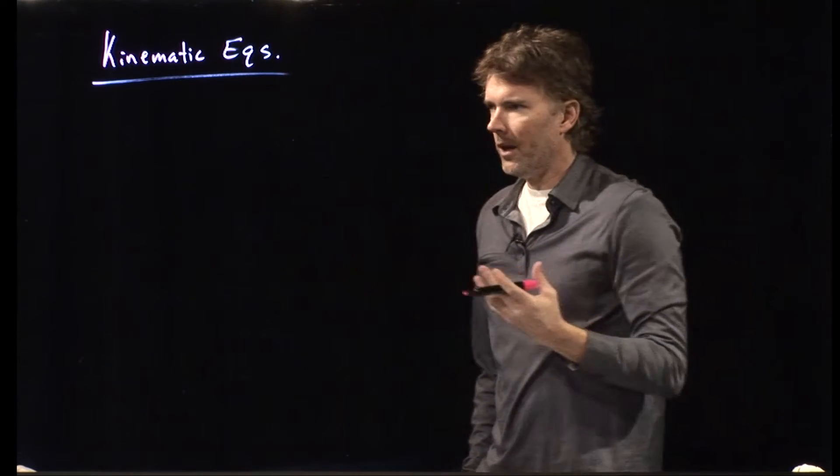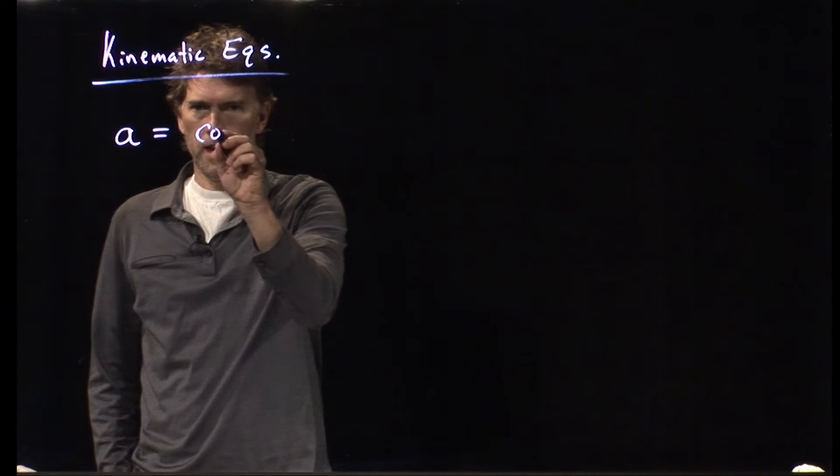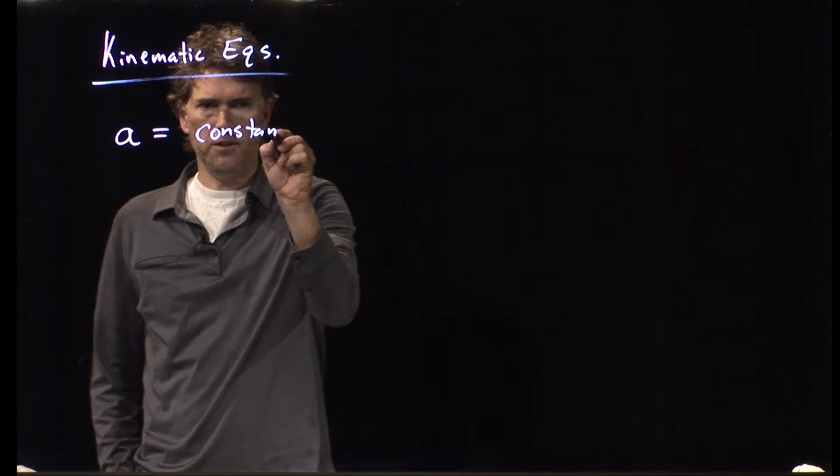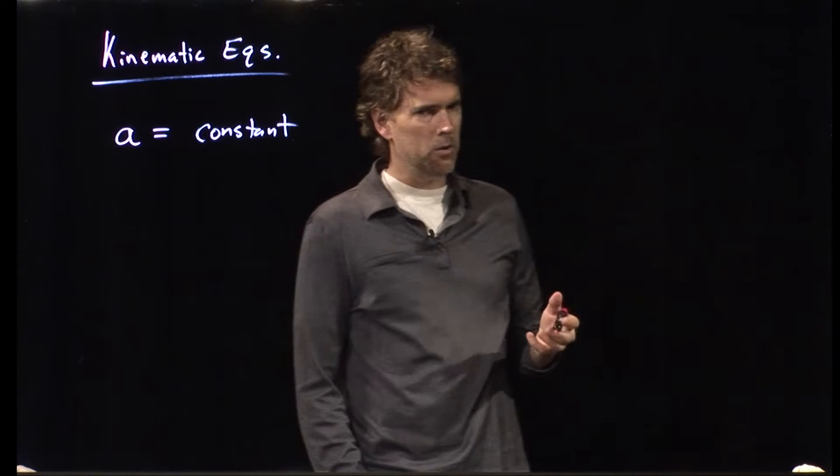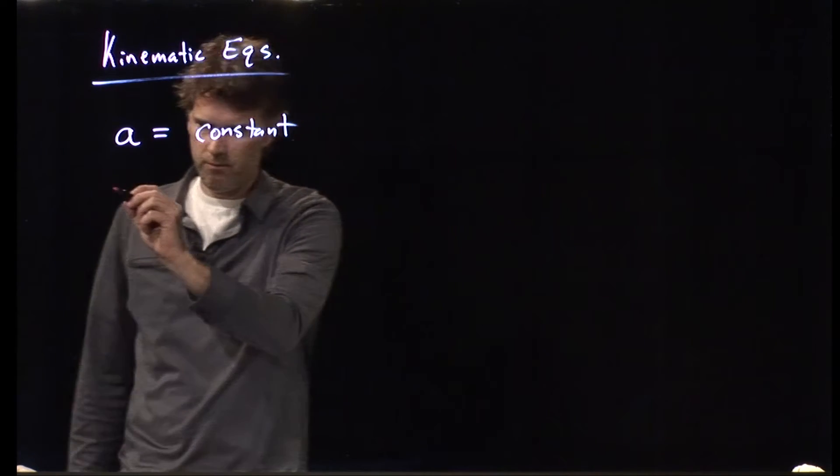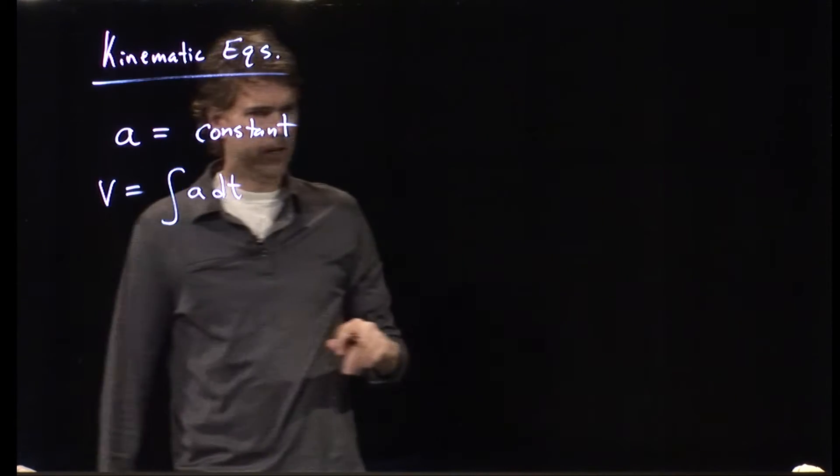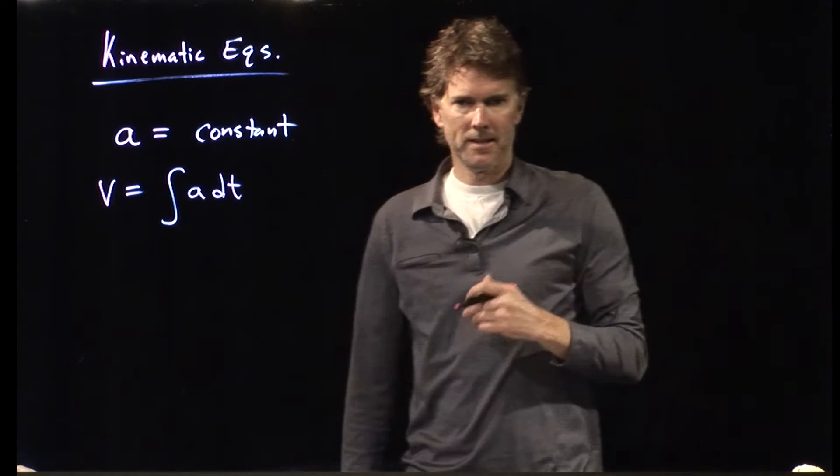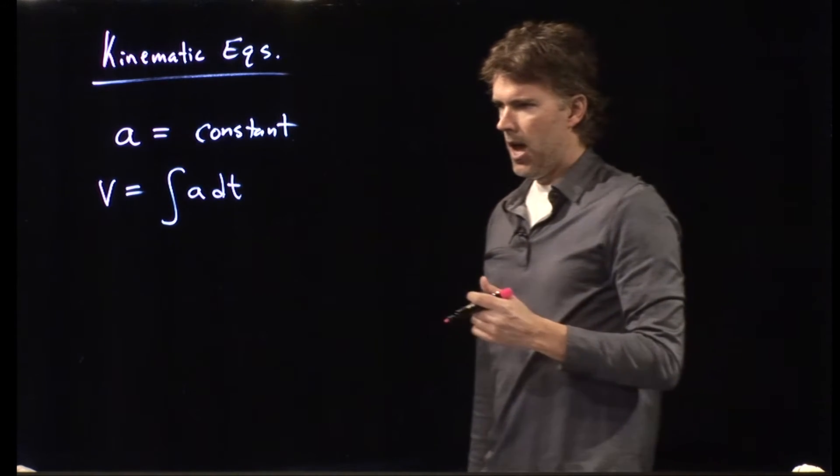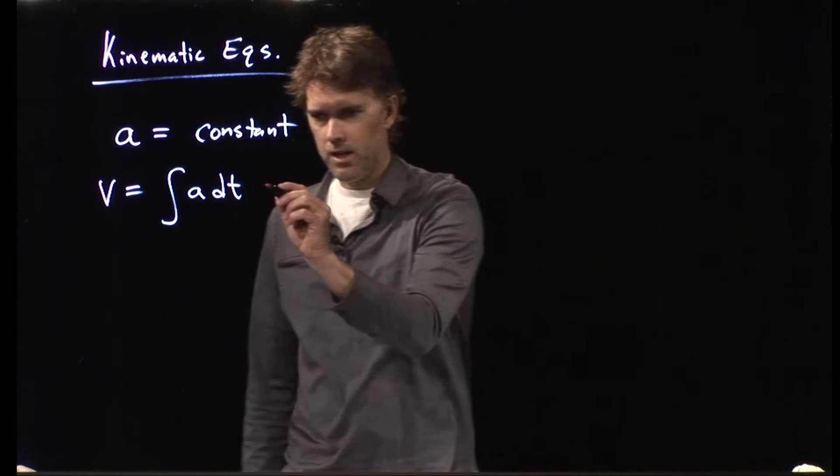So if we start with an acceleration and we say that that acceleration is constant, how do we get to velocity? Well, velocity turns out to just be the integral of acceleration with respect to time. And if A is in fact a constant, it comes out of the integral.